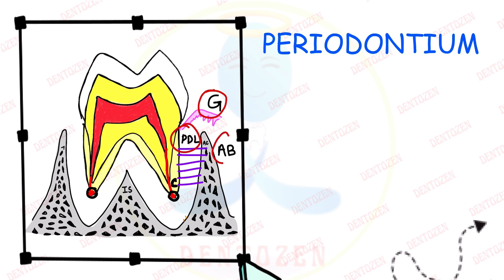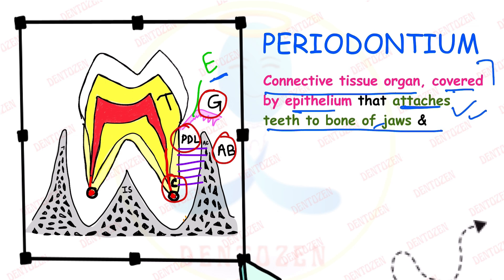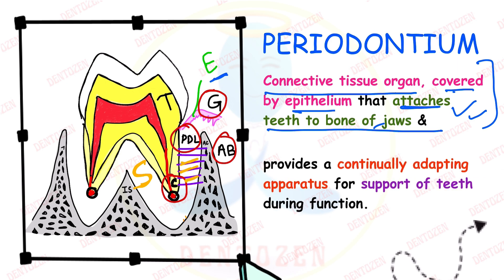The four tissues of periodontium are all connective tissues, forming a connective tissue organ. Above that they have epithelium, and their main role is attachment of the tooth. The first part of the definition: periodontium is a connective tissue organ covered by epithelium that attaches teeth to the bone of the jaws. The second function is that it provides a continually adapting apparatus for support of the teeth during function.